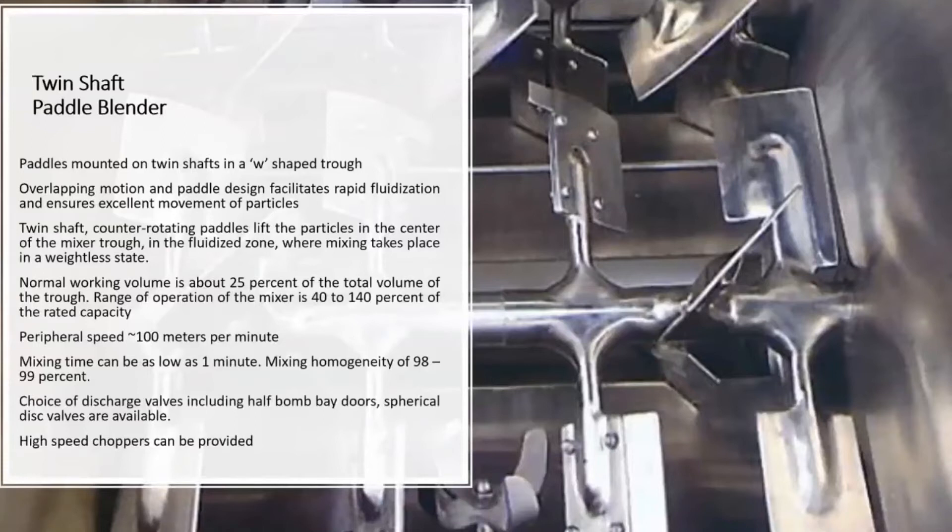Twin shaft paddle blenders are designed to work on the principle of fluidization. The trough for the twin shaft blenders is a W-shaped trough and the paddles overlap each other. They rotate at high speeds and cause fluidization, so the mixing happens using the principle of fluidization.